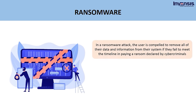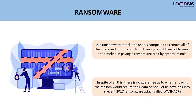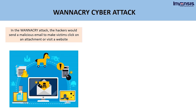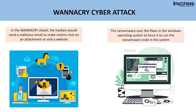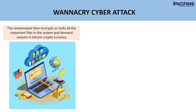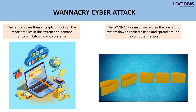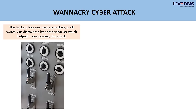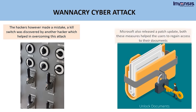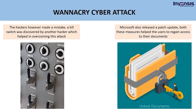The next type is ransomware. In a ransomware attack, the user is compelled to remove all of their data from their system if they fail to meet the timeline in paying a ransom declared by cyber criminals — and there is no guarantee that paying the ransom would secure their data. In the 2017 WannaCry attack, hackers sent a malicious email to make victims click on an attachment or visit a website. The ransomware used flaws in the Windows operating system to encrypt or lock all important files and demand a ransom in Bitcoin cryptocurrency. The ransomware also replicated itself to spread around the computer network. However, hackers made a mistake — a kill switch was discovered by another hacker, and Microsoft released a patch update, both helping users regain access to their documents.